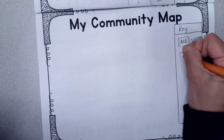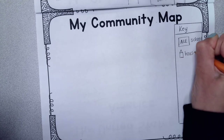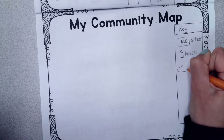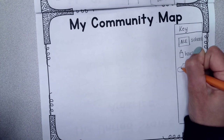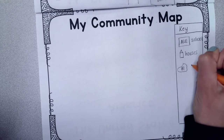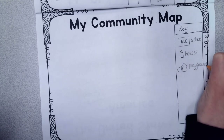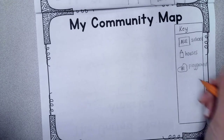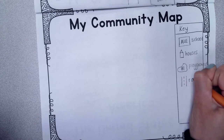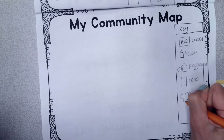The next thing we're going to do is little houses for a neighborhood that's nearby. We may want to put our playground on here. We'll just label that 'playground' because that's the best I can do for a playground. We could have some roads on here.